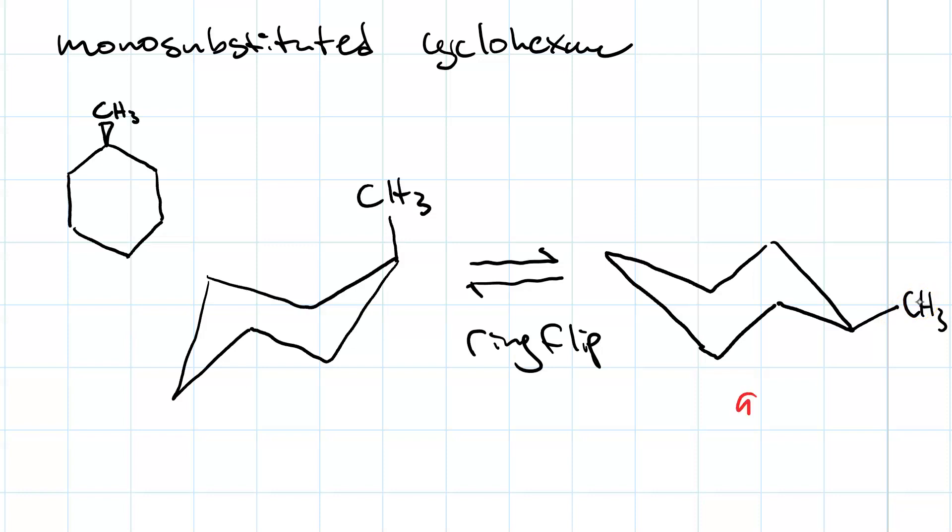And now, instead of 50-50, we're talking 95% of the time it is equatorial, and only 5% of the time is it axial. Which means, having the bulky substituent in the equatorial position is more stable. And in fact, we could draw our arrows more like that, to indicate that it spends more time in the conformation shown on the right.